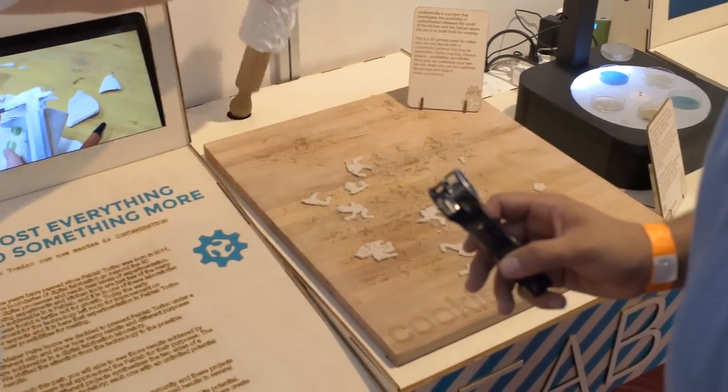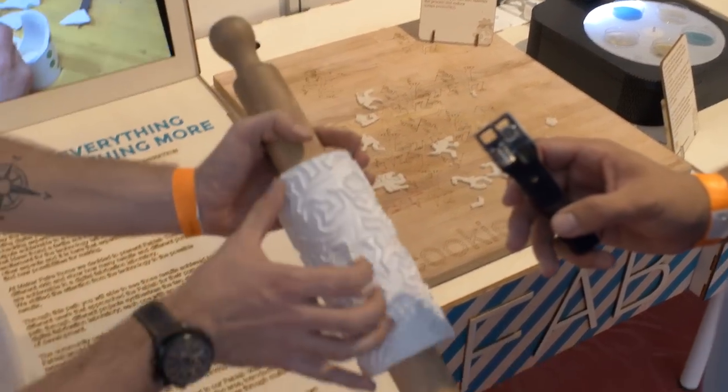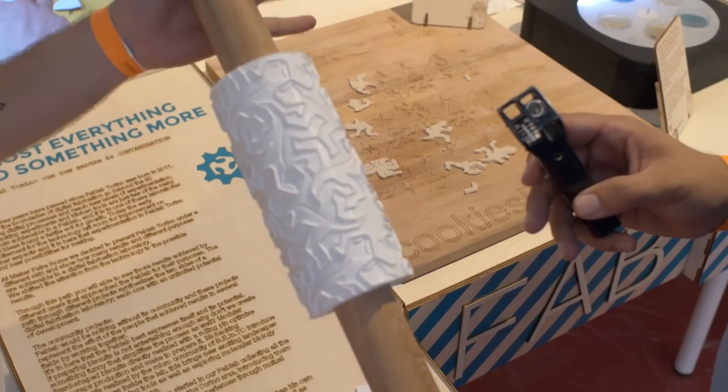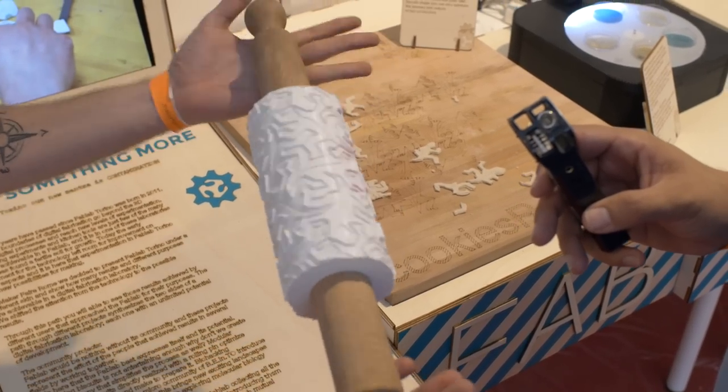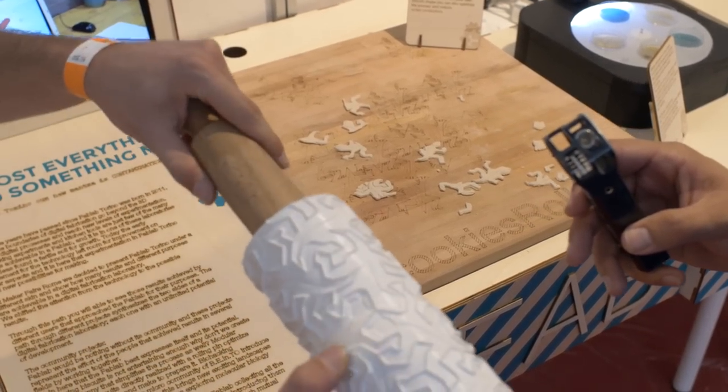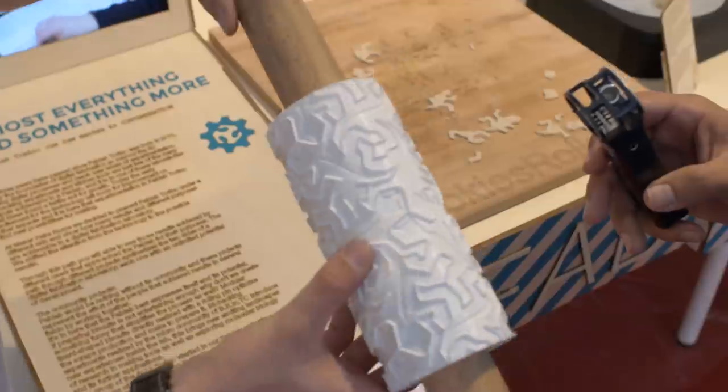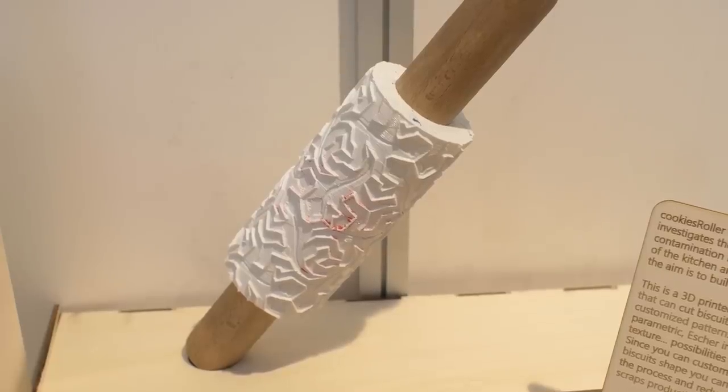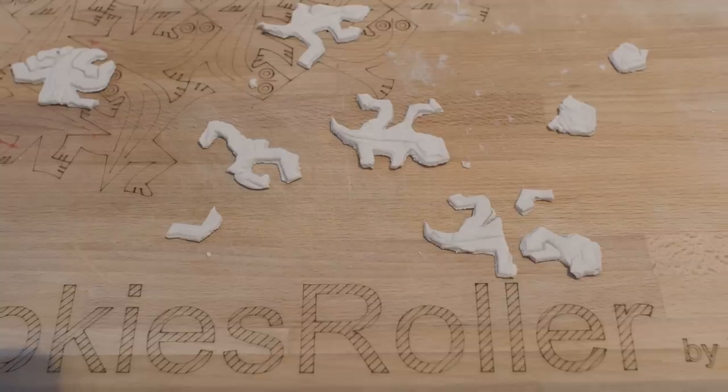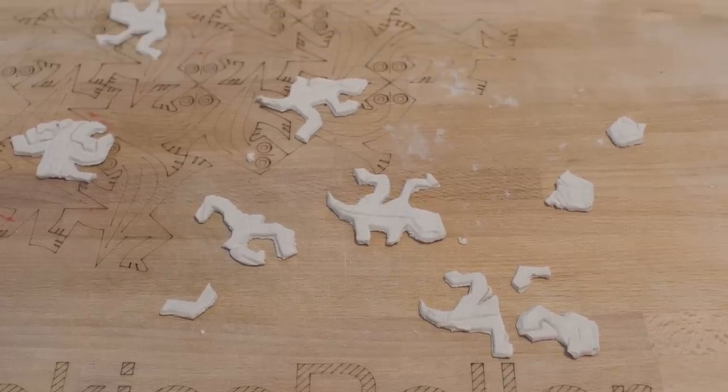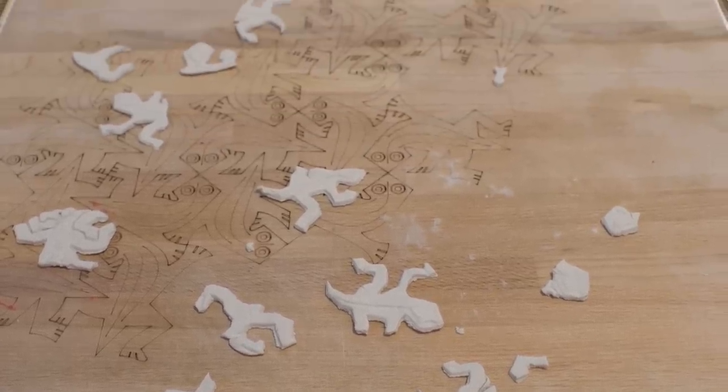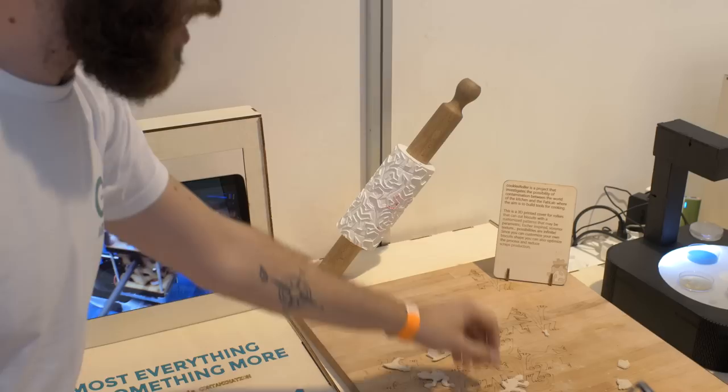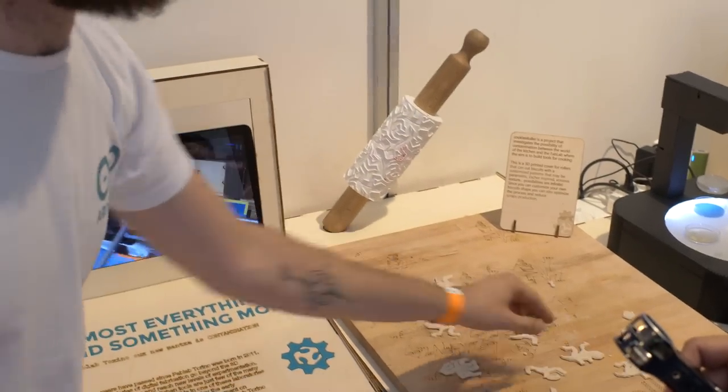So it's 3D printed? Yes, it is 3D printed, this part, and then you can add it to a normal roller and this is what you have in the end. This is like the typical Escher design, so it optimizes the process of making biscuits because you don't produce scraps. And then you have reptiles as a result which is pretty nice.